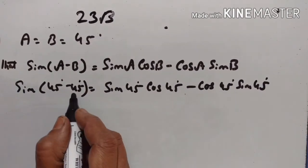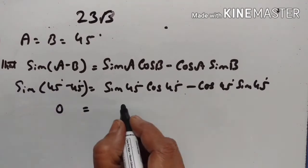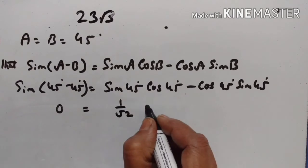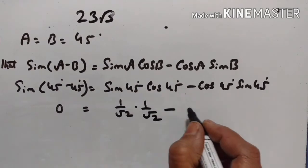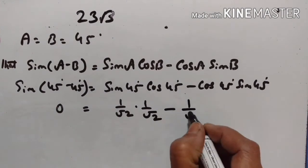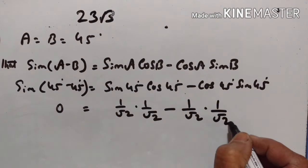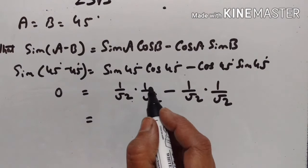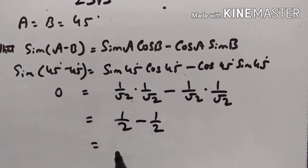45 minus 45 is equal to 0, and sin 0 is equal to 0. Sin 45 is equal to 1 upon square root of 2. Cos 45 is equal to 1 upon square root of 2, minus cos 45 (1 upon square root of 2) into sin 45 (1 upon square root of 2). 1 upon square root of 2 into 1 upon square root of 2 is equal to 1 upon 2. So half minus half is equal to 0. LHS is equal to RHS.